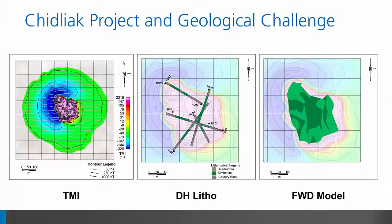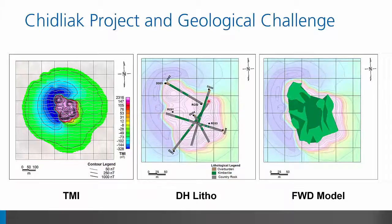The kimberlite of interest has a well-defined magnetic anomaly and was discovered by prospecting. There is sparse drilling through the kimberlite, which has a potentially complex internal geology, and the challenge was to create a 3D model consistent with all available data — including airborne and ground magnetic field observations, lithology and borehole susceptibility measurements from drill holes, and an existing parametric model derived from forward modeling.